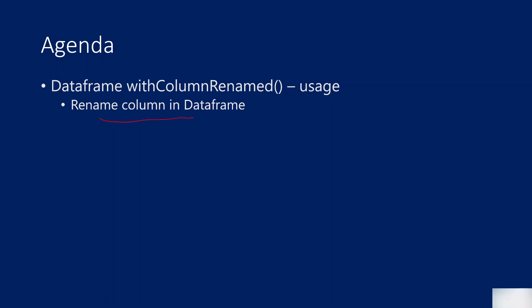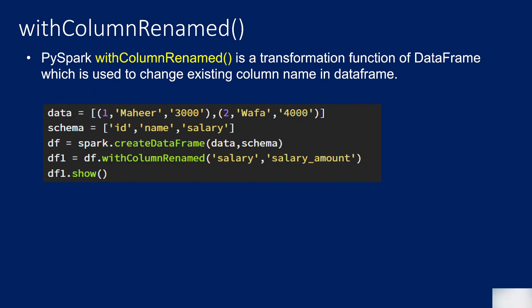In our last video we discussed the usage of the withColumn function, which is used to add a new column, change an existing column's data type, or change existing column values. But the withColumnRenamed function helps you change the column name in the DataFrame — that means you can rename an existing column.